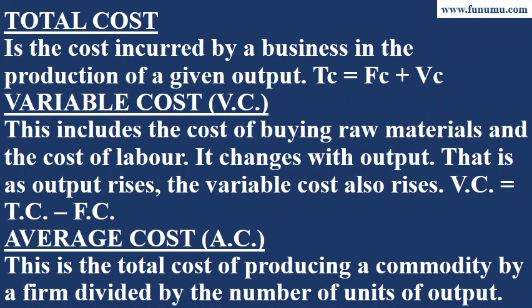Total cost is the cost incurred by a business in the production of a given output. TC equals FC plus VC. Variable cost (VC) includes the cost of buying raw materials and the cost of labor. It changes with output — that is, as output rises, the variable cost also rises.